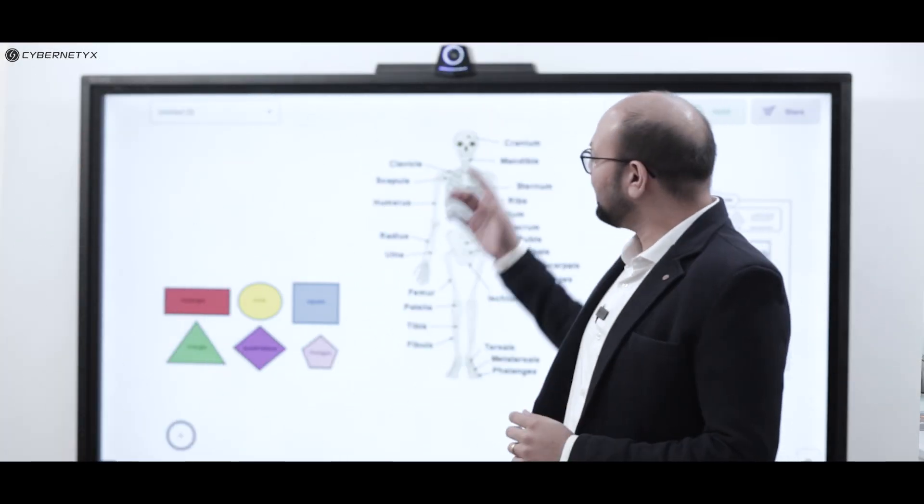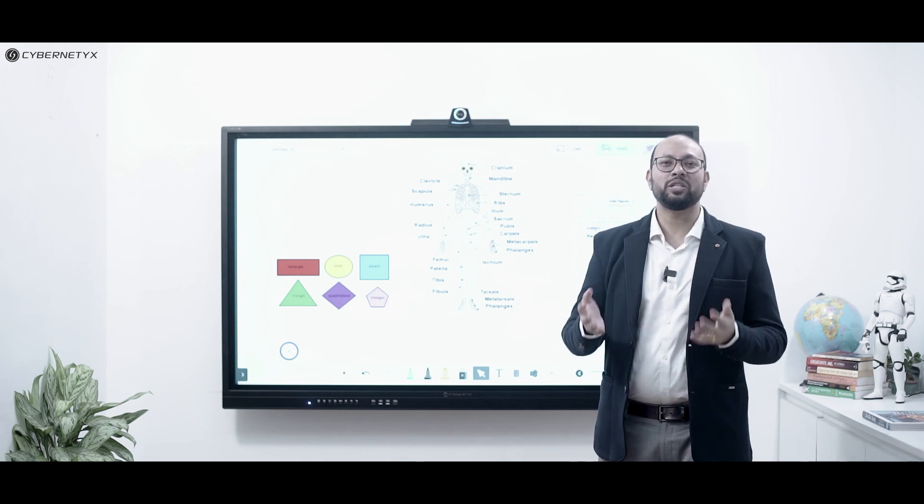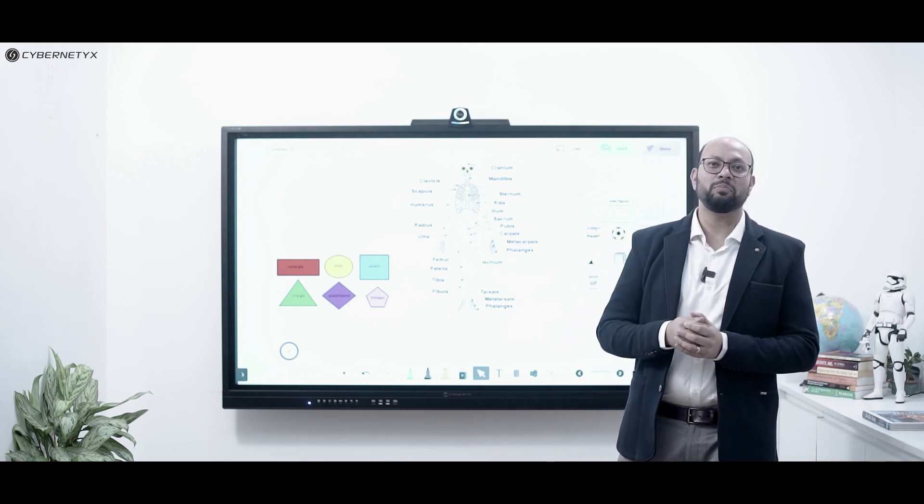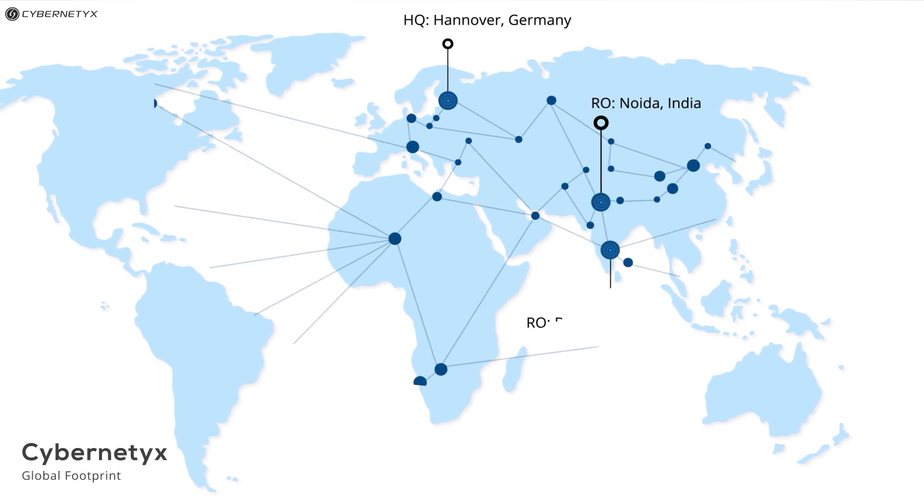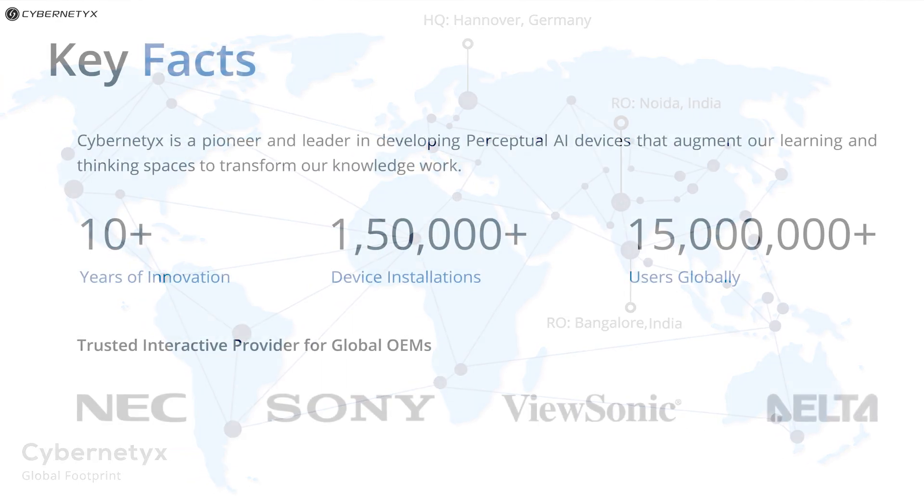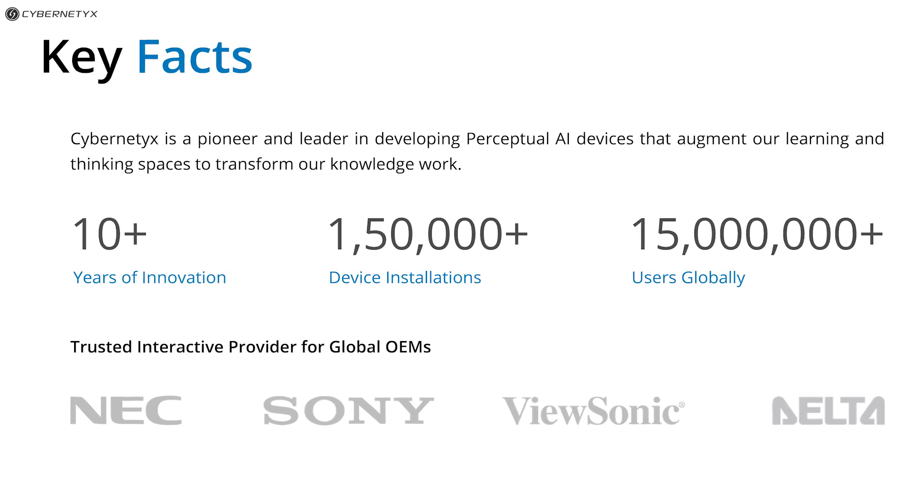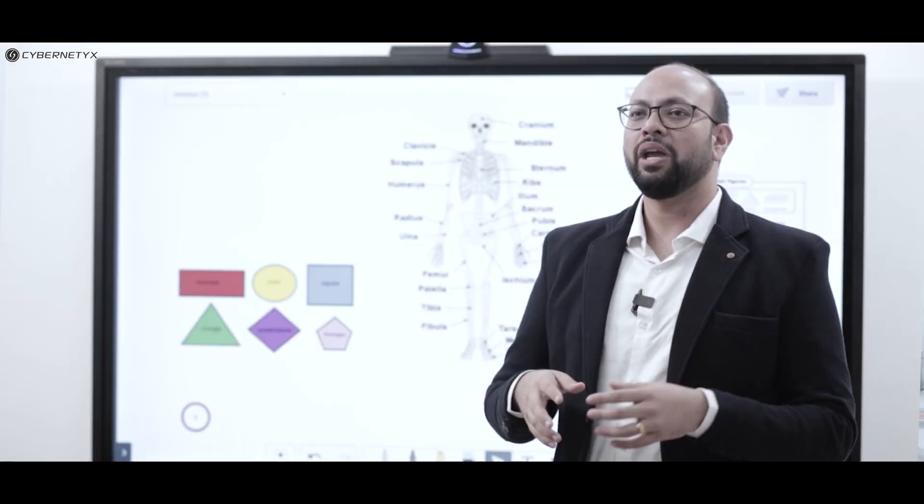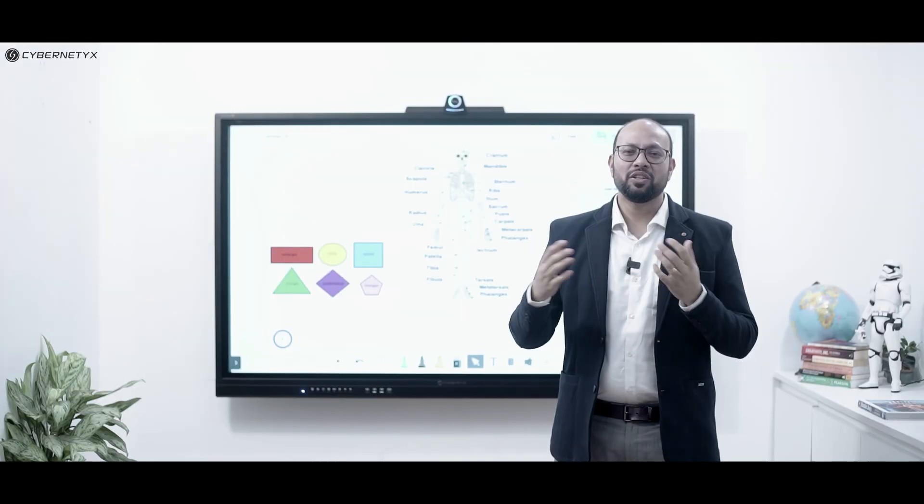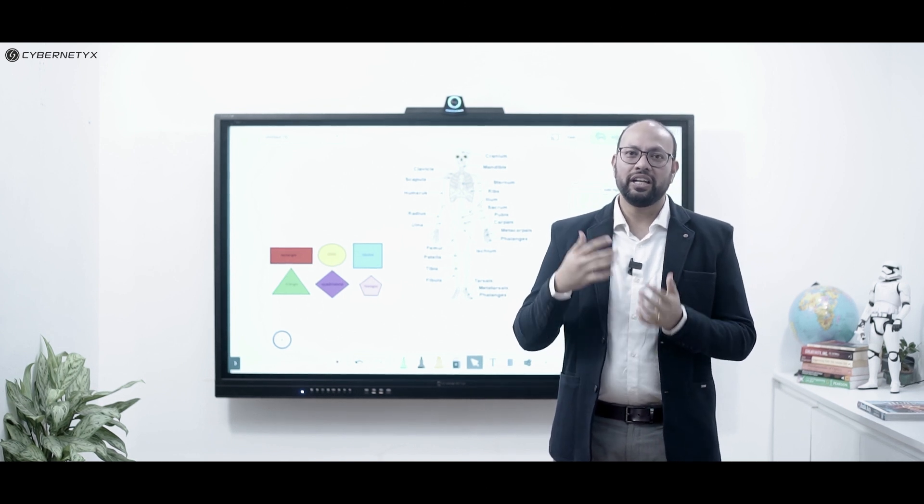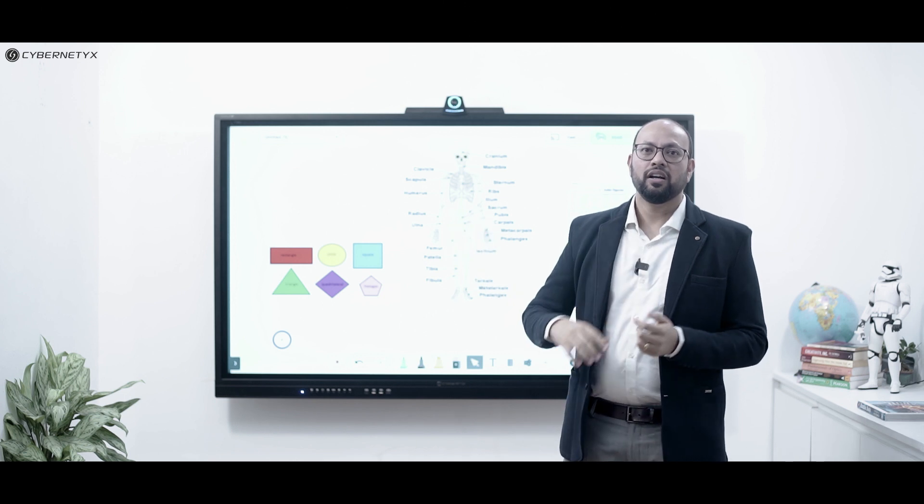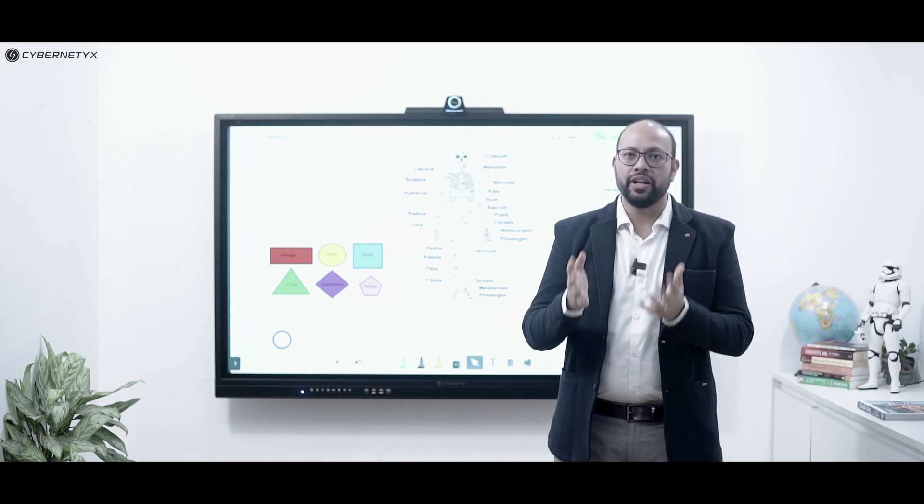Hi, I'm Anant Vijay and this is Curiosity, our latest product in the series of interactive displays from Cybernetics. Cybernetics is a German company with more than 10 years of presence in India. Today we have more than 1.5 lakh classrooms successfully powered by our technology, making us the leaders in this industry. Based on our rich experience in the Indian education system, we designed Curiosity with features specifically built for Indian classrooms.